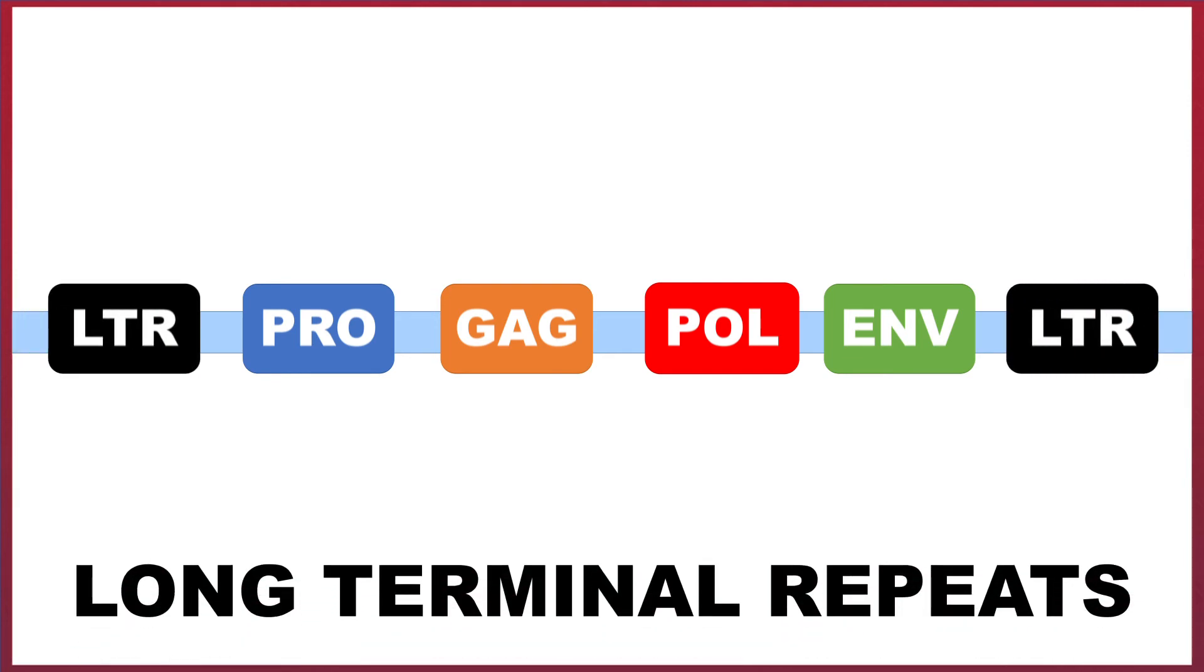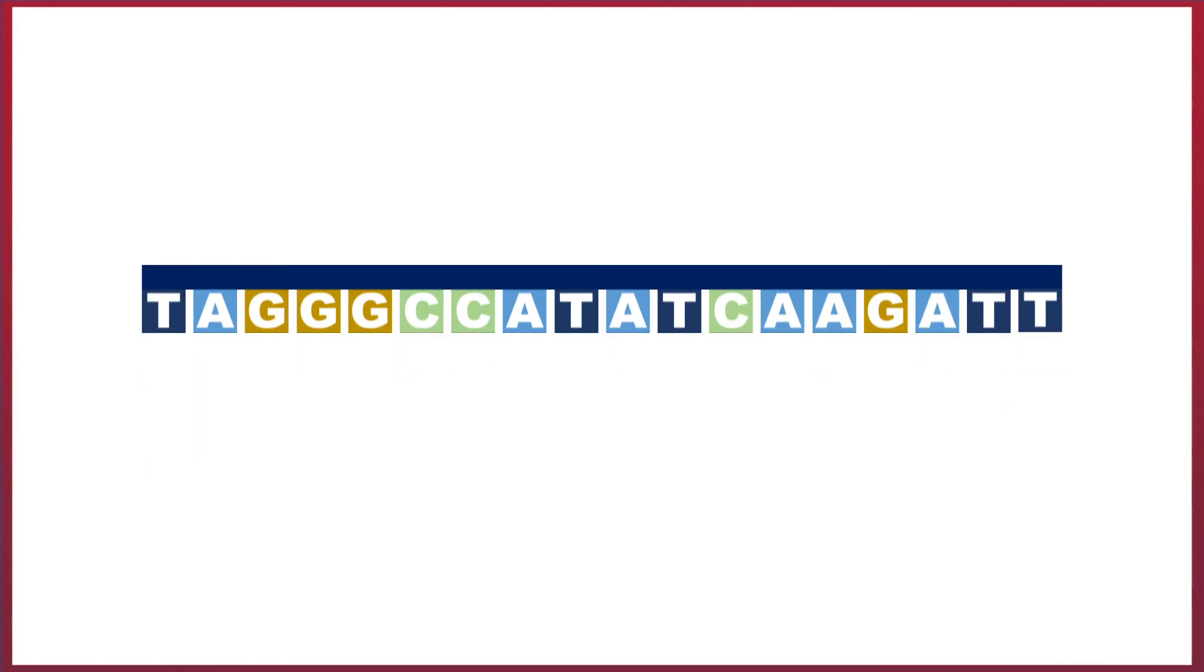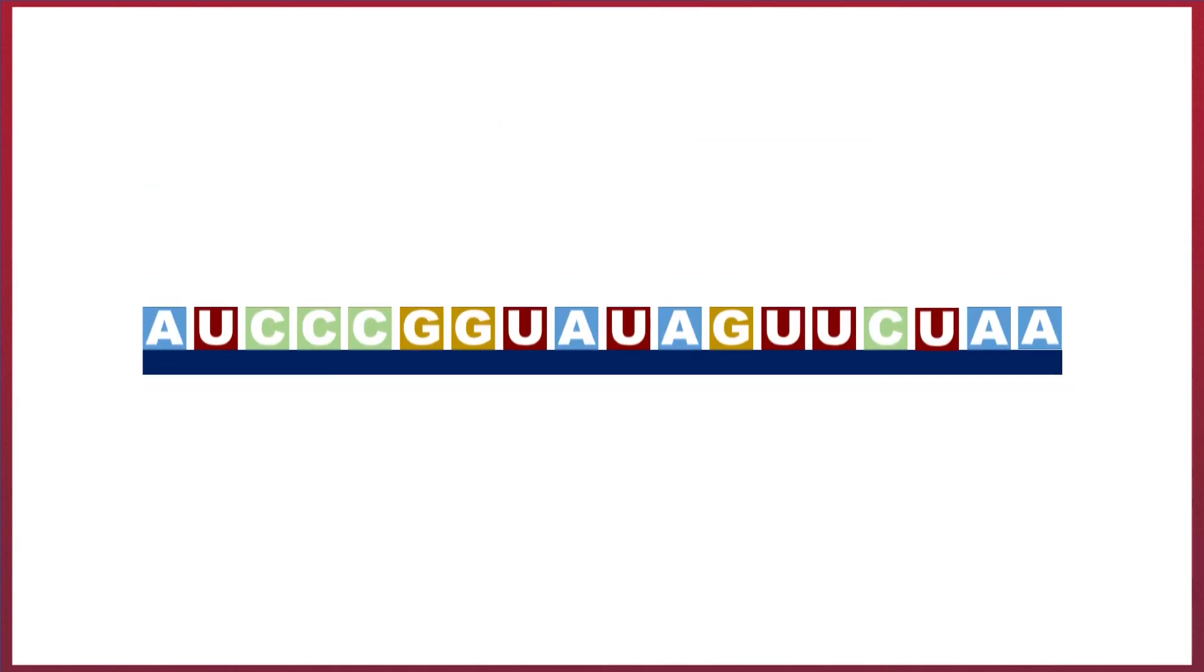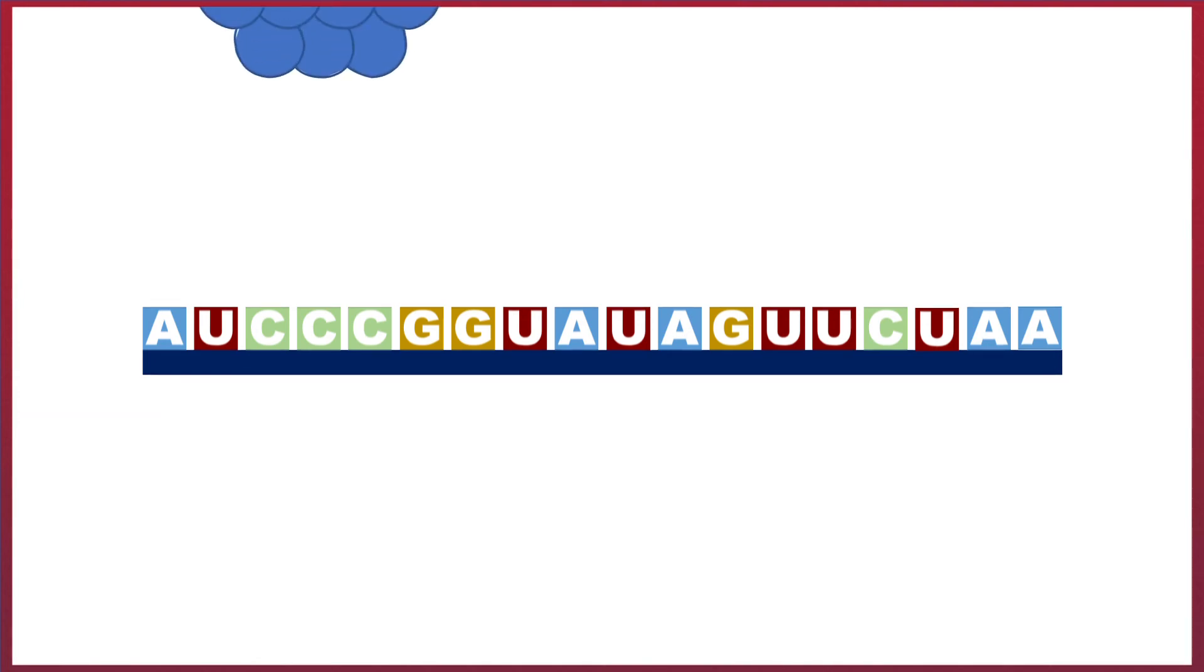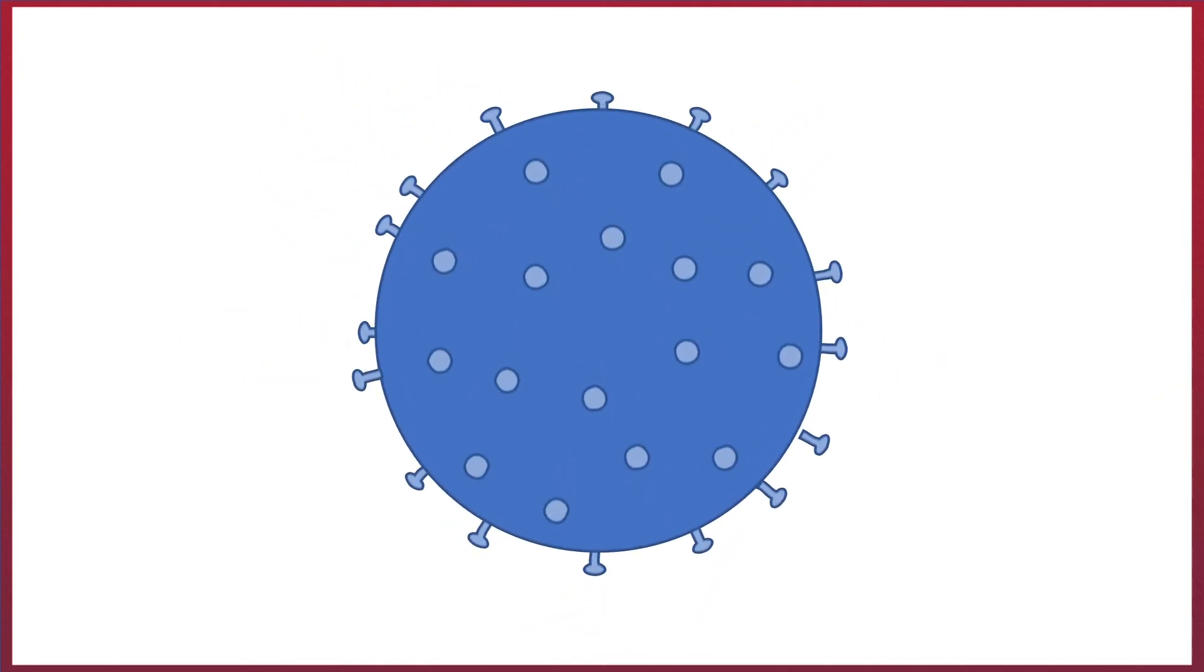In order to produce more retroviral particles, the retroviral DNA is expressed by the host cell's RNA polymerase, which forms virus-related RNA. These strands are then used as templates to produce the proteins needed to form a new protein envelope, as well as the enzymes which all come together to form a new retroviral particle.